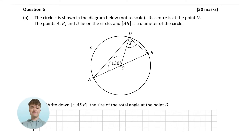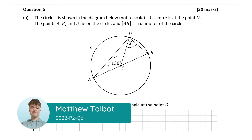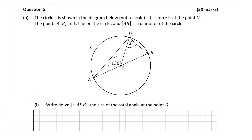Hello and welcome to the video. It's Matthew here and we're looking at question 6 which is worth 30 marks. We're shown the circle C in the diagram with centre O and the points A, B and D lying on the circle. We're told line AB is a diameter of the circle.